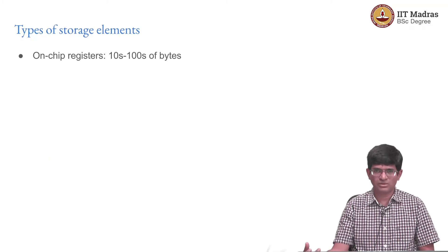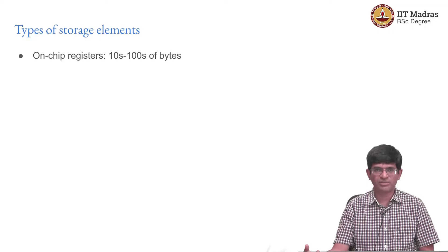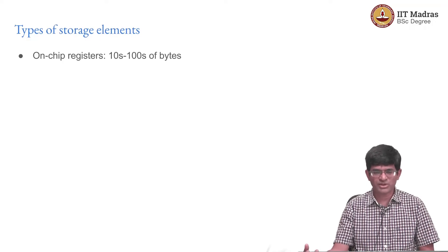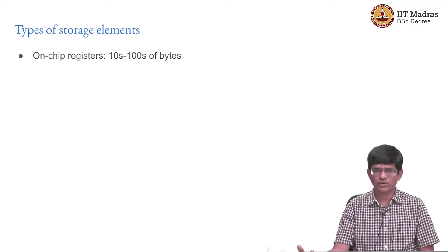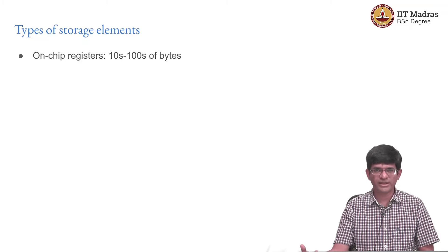Otherwise, what will happen is the compiler will decide that you are only using A for some temporary computations and store it in registers. The main thing you need to understand about registers is they are pretty small in number. You may be able to store typically around 10, and probably at most around 30 or so values in the registers of any modern processor. Each of those values could be either 32 bits or 64 bits depending on the type of processor, but this is not really a whole lot if you are trying to write a large program.